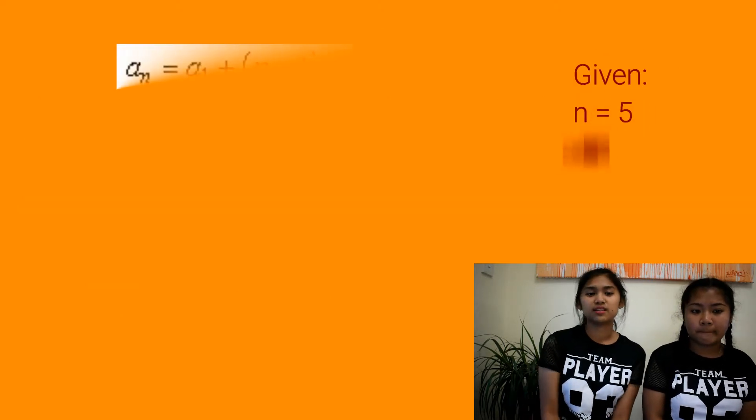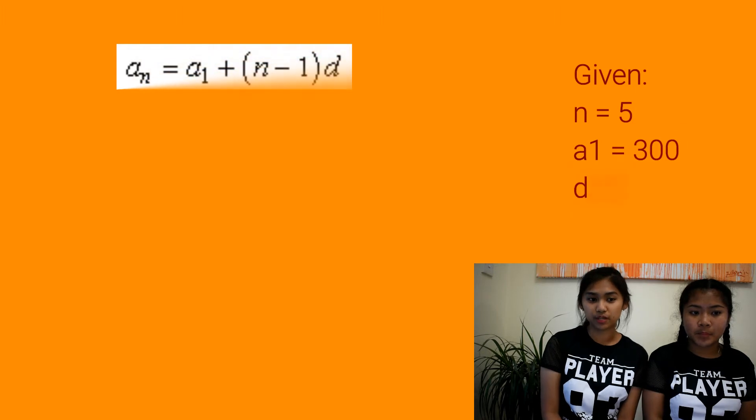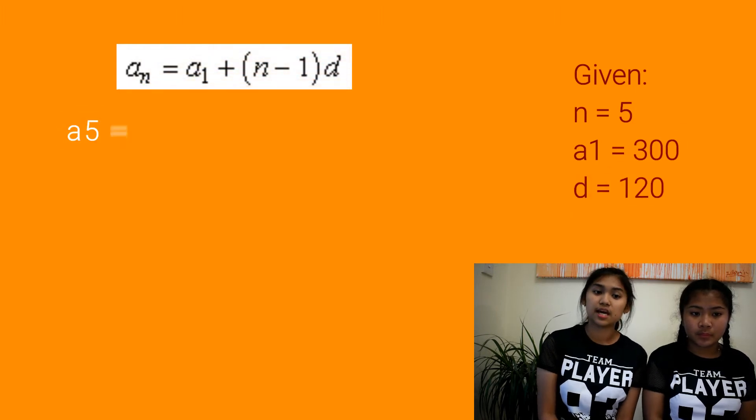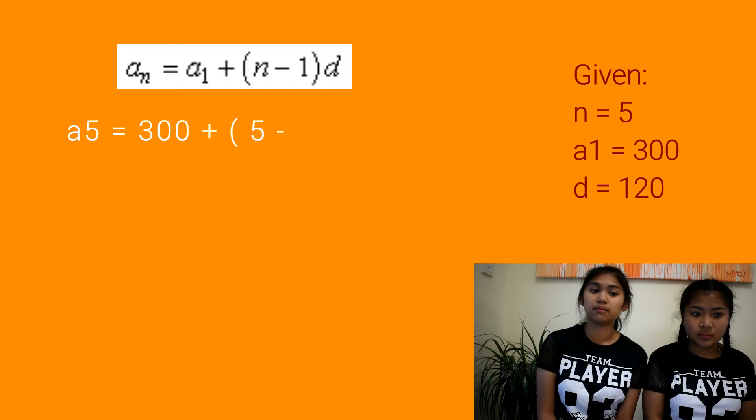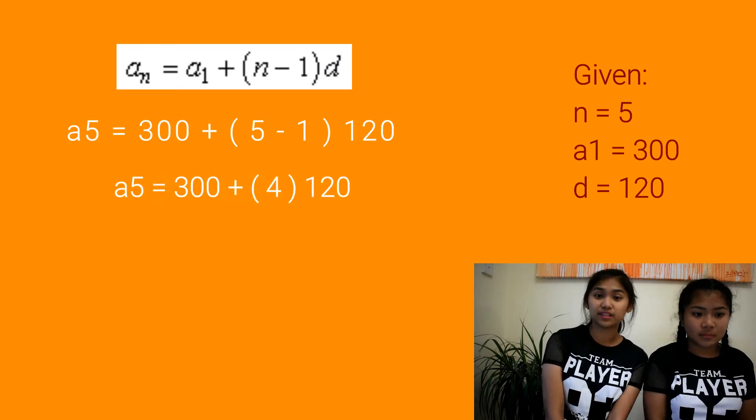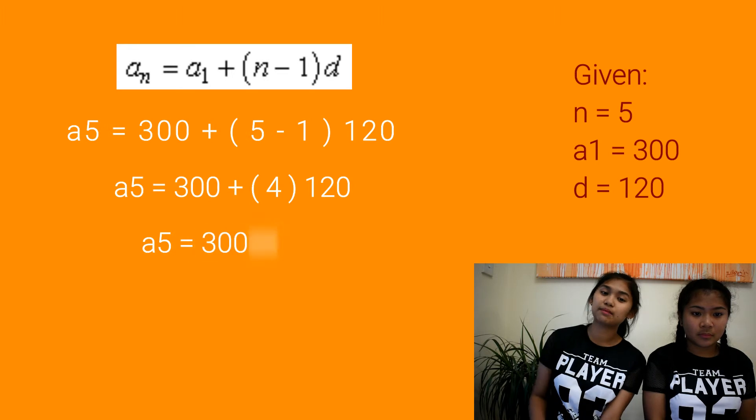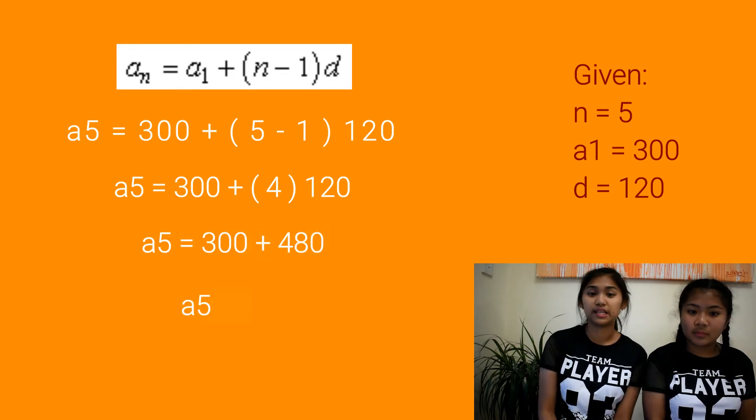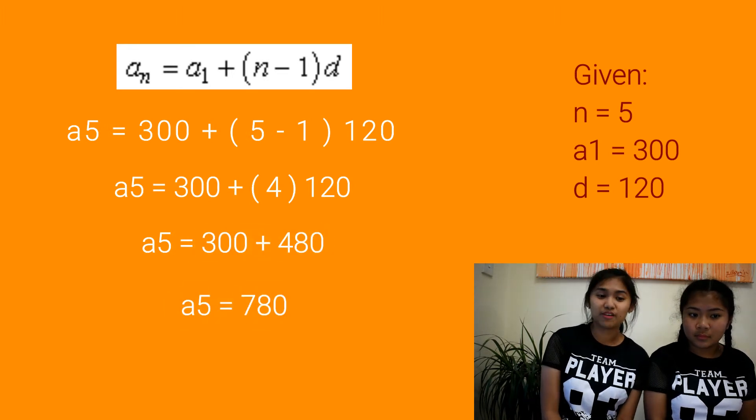As what I said, we're going to use the first formula. For instance, A sub 5 is equals to 300 plus quantity of 5 minus 1 multiplied by 120. First, subtract 5 and 1, then multiply it by 120, then add 300. Now, we have our n-th term.